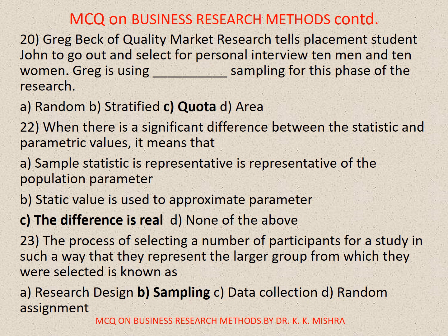Question number 22. When there is a significant difference between the statistic and parametric values, it means: A. Sample statistic is representative of the population parameter, B. Statistic value is used to approximate parameter, C. The difference is real, D. None of the above. Correct option is C. The difference is real. Question number 23. The process of selecting a number of units for a study in such a way that they represent the larger group from which they were selected is known as: A. Research design, B. Sampling, C. Data collection, D. Random assignment. Correct option is B. Sampling.